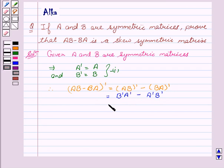Which is equal to BA minus AB from first. Next, this is equal to, on taking minus common, we get AB minus BA.